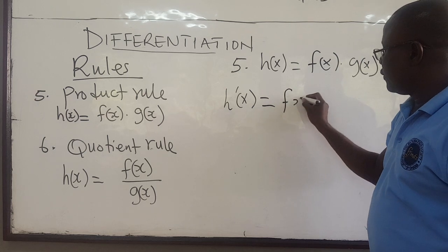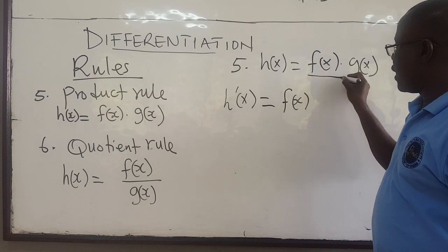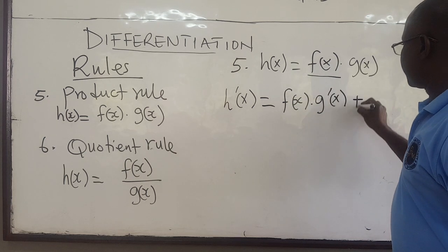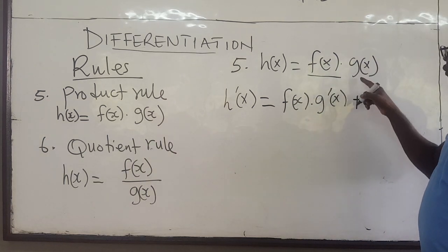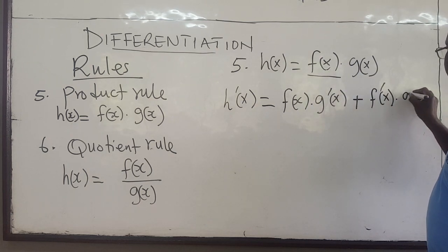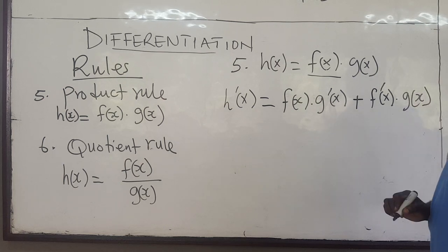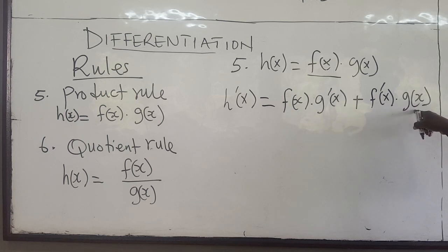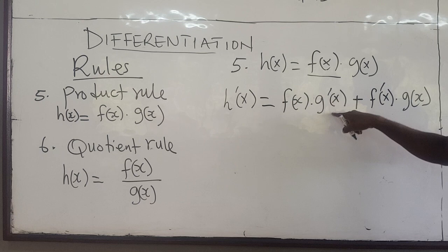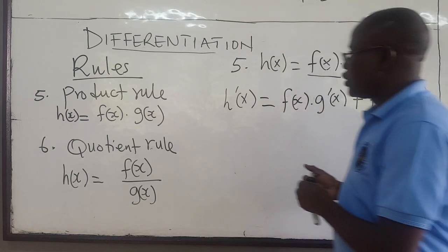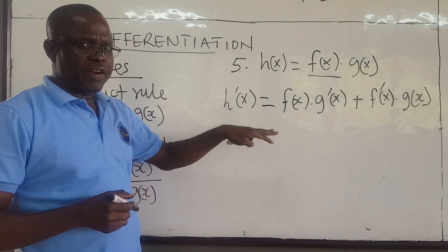So here you leave f(x) and find the derivative of g, plus leave g and find the derivative of f — f'(x) times g(x). The order doesn't matter. We could have found the derivative of f first multiplied by g, then plus leave f multiplied by the derivative of g. This is the product rule — very, very important.